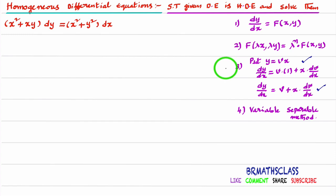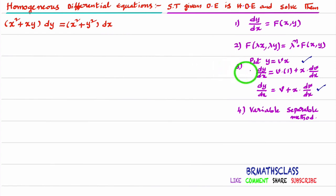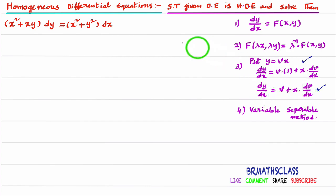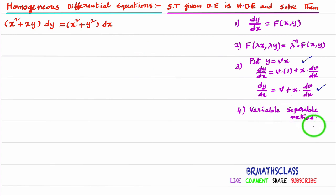From the third step onwards, it is solving the homogeneous differential equation. Once you confirm that the given differential equation is homogeneous, we solve it using a specific method. First, we put y = vx. In the differential equation, wherever y appears, we write vx. Differentiating with respect to x gives dy/dx = v + x·(dv/dx). Then we follow the variable separable method.